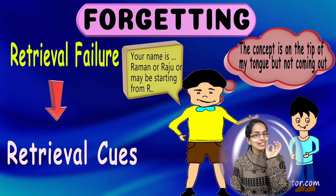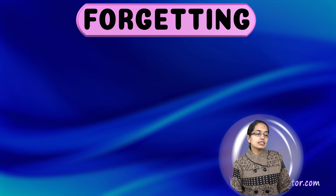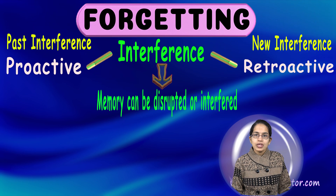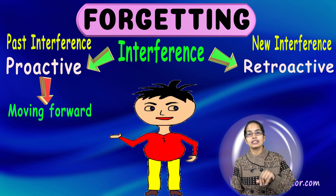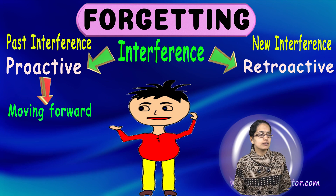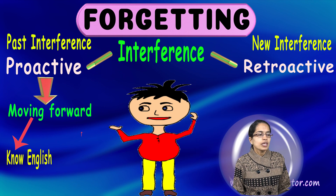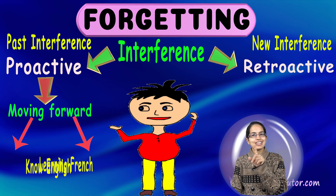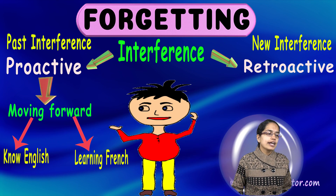Retrieval cues can help remember those concepts. The next cause is interference — a kind of distraction within your actual memory systems. It could be proactive or retroactive. Proactive means the past is interfering with your present learning. For example, if I know English and now I'm trying to learn French, the English I learned in the past is interfering with my present French learning — that is proactive interference.